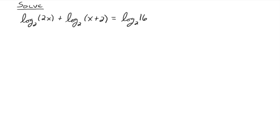Let's try one more. Log base 2 of 2x plus log base 2 of x plus 2 equals log base 2 of 16. You cannot just divide out all the log base 2s and be left with 2x plus x plus 2 equals 16 — you can't do that, because this is not multiplication. It's the log of 2x in base 2; all of this is one notation. The most common error is to scratch out all the log base 2s and solve a simple linear equation — be very careful, it's not that simple.